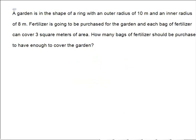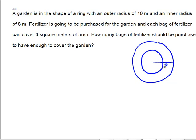Here we have a garden that's in the shape of a ring with an outer radius of 10 and an inner radius of 8. Let's draw a sketch first. We have a ring looking like that, and it says that the outer radius is 10, so go out there to 10 total. It says that the inner radius is going to be 8, so it's going to go there.